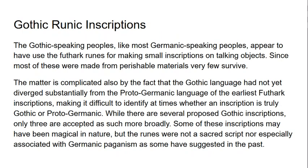There are some Gothic runic inscriptions, as the Gothic-speaking peoples used the Futhark alphabet for small inscriptions on talking objects. Most do not survive because they were written on perishable materials such as wood. By the time we have the earliest Gothic runic inscriptions — around the 300s and 400s CE — the Gothic language hadn't actually diverged substantially from Proto-Germanic, making it quite difficult to identify whether an inscription is Gothic or Proto-Germanic.